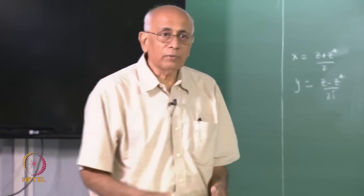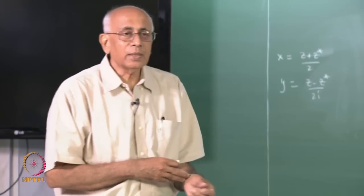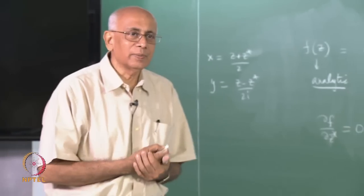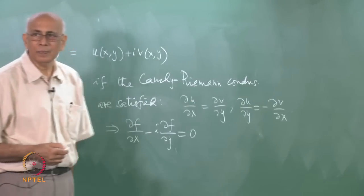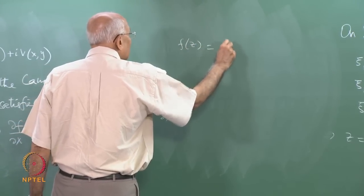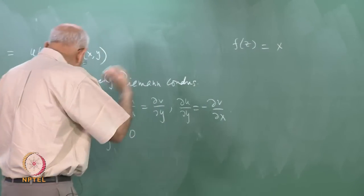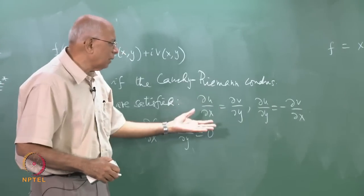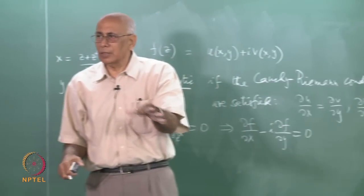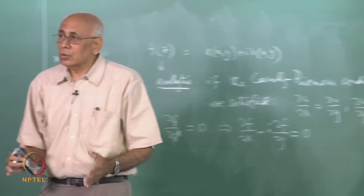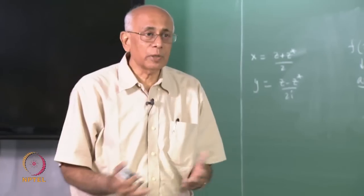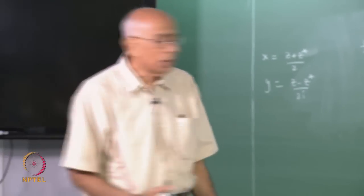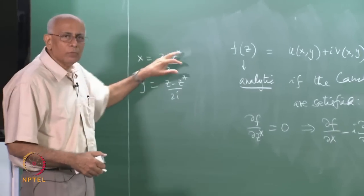A quick way to check if a function is analytic is to see if it is smooth with first-order derivatives and has no dependence on z star — if it can be expressed purely as a function of z. A function cannot be analytic in a region if it has no imaginary part at all, or is purely real with imaginary part identically zero, since x equals (z + z*)/2 which involves z star.